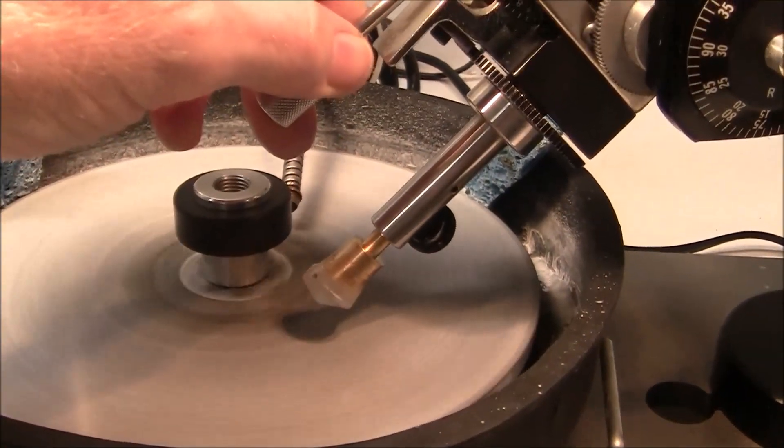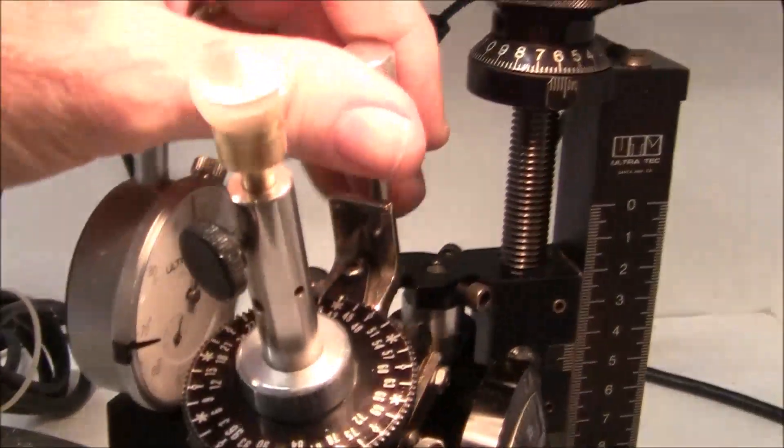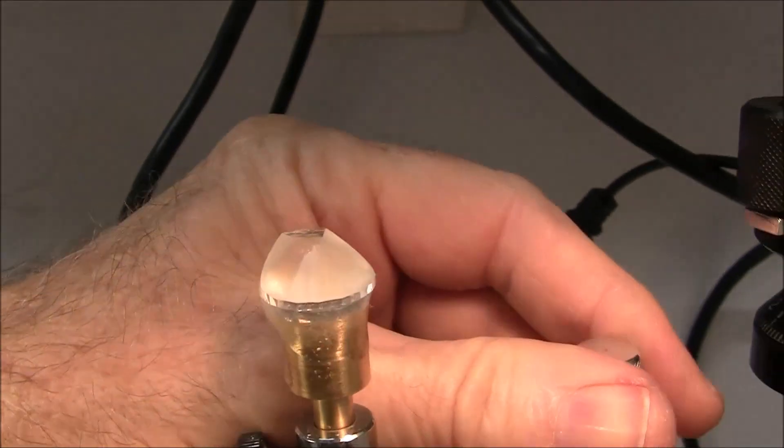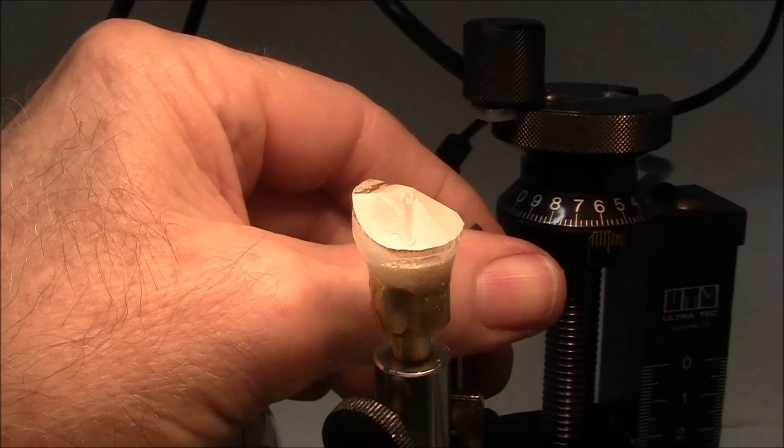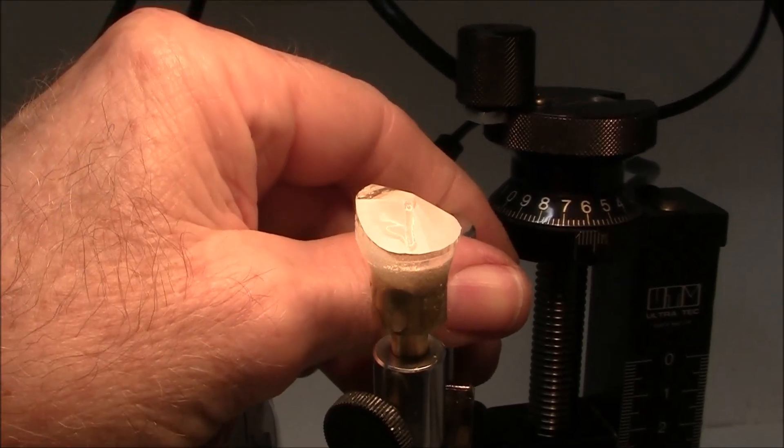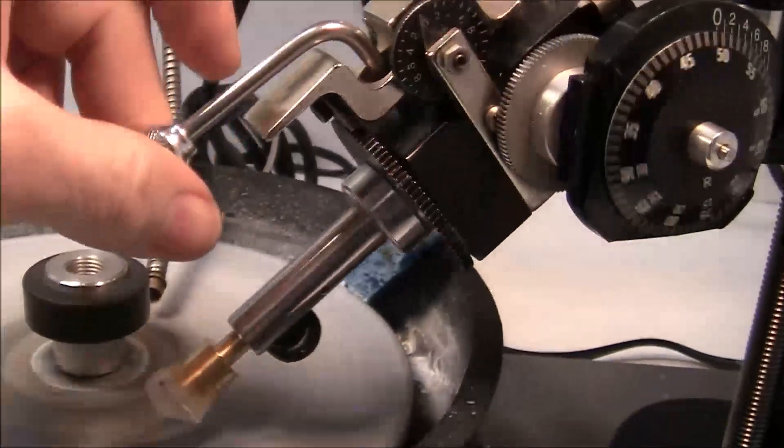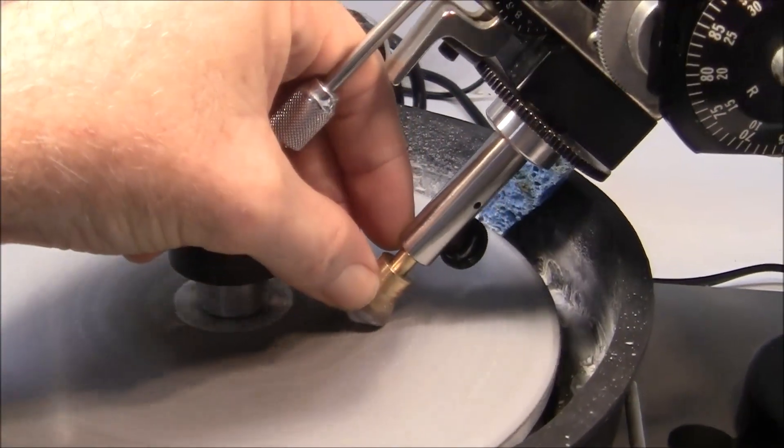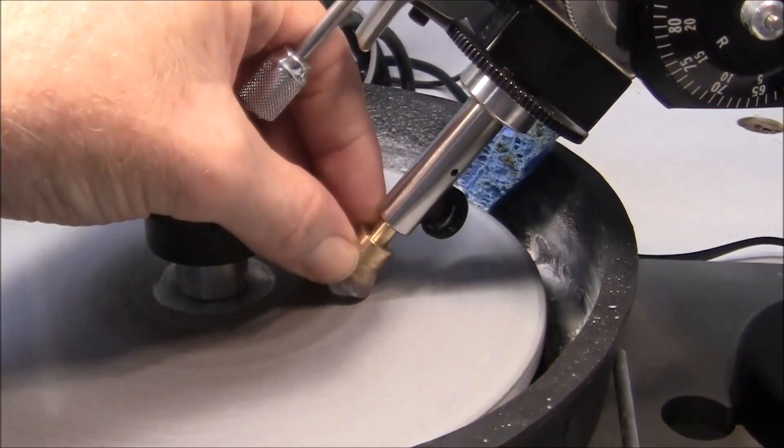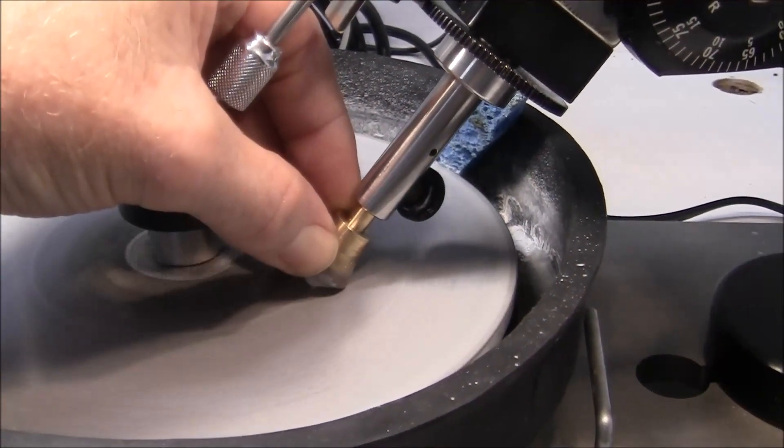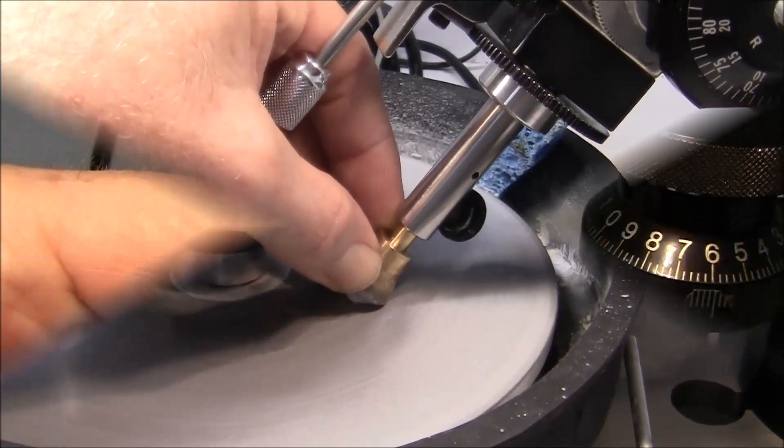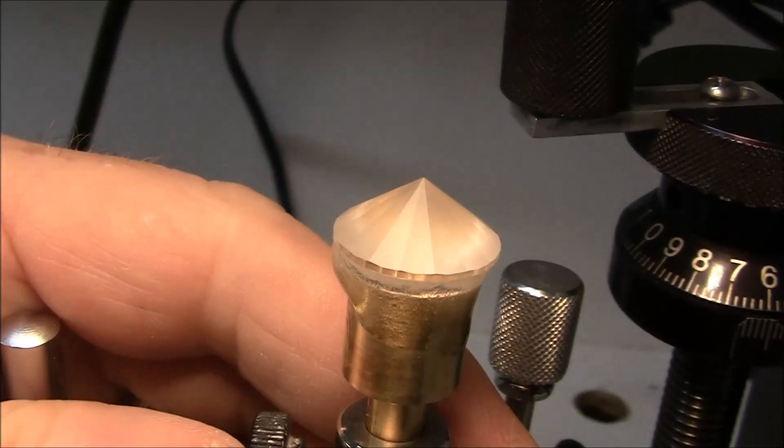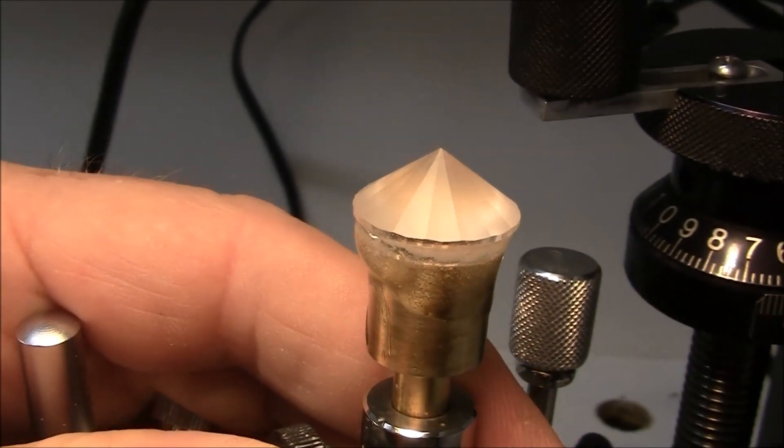I'm cutting the crown facets now. I'm using a 360 channel lap. I've cut the first set of facets with the 600 grit lap.